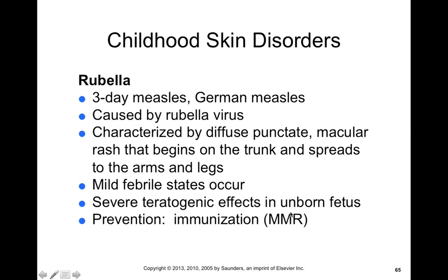Other childhood skin disorders include rubella — called three-day measles or German measles — caused by rubella virus. It's characterized by a diffuse punctate macular rash that begins in the trunk but spreads to the arms and legs. Mild febrile states can occur. However, if a pregnant mother is infected with rubella, severe teratogenic effects can occur in the unborn fetus. This is why we want to prevent it with proper immunization with the measles-mumps-rubella (MMR) vaccine.